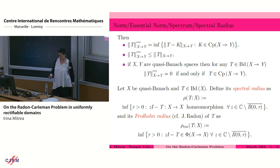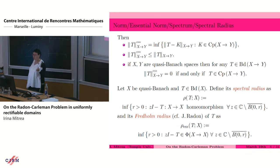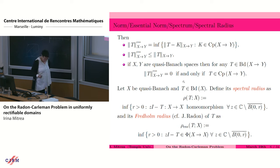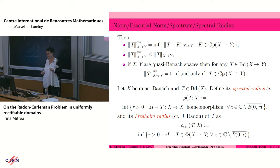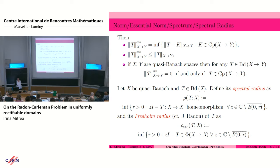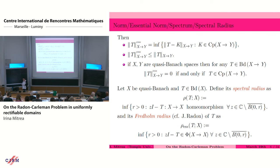The essential norm is smaller than the norm of the operator T. If X and Y happen to be quasi-Banach, then the essential norm is zero if and only if the operator is compact. Now assuming we're dealing with a quasi-Banach space and T is an operator from the quasi-Banach space into itself, we introduce the spectral radius and the Fredholm radius. The spectral radius is the radius of the smallest disk centered at the origin which contains the spectrum of the operator. The Fredholm radius is similarly the smallest radius such that the disk centered at the origin with that radius contains the essential spectrum.